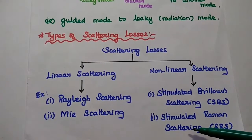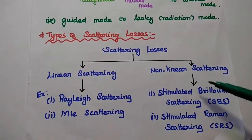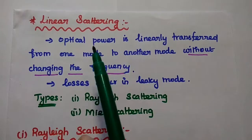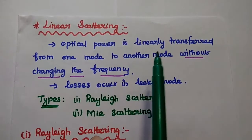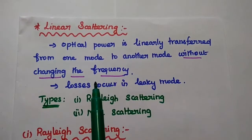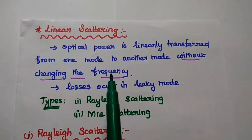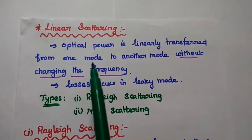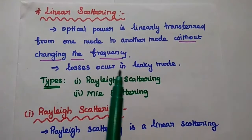In this video lecture, we are going to discuss linear scattering methods in detail; in the next video lecture, we will discuss non-linear scattering. In linear scattering, the optical power is linearly transferred from one mode to another mode without changing the frequency — there is no change in the frequency range. At constant frequency, the optical power is transferred from guided mode to leaky mode, and these linear scattering losses occur in the leaky mode.